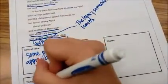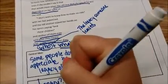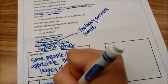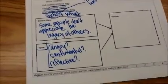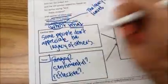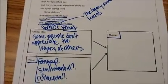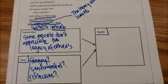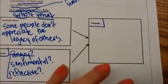Now I need to decide the tone of this poem. What is the author's attitude — is it angry, sentimental, reflective, or something else? Choose one of these or write your own tone. Based on the central idea and the tone, what do you think the message is trying to be? What is the author trying to teach us? If your central idea is that some people don't appreciate the legacy of others, what is the message of this poem? Make sure that the message is global, a sentence or phrase, and sounds like advice.